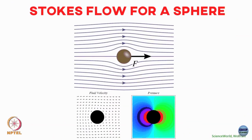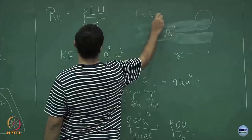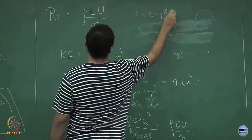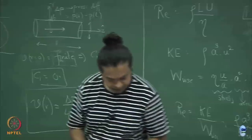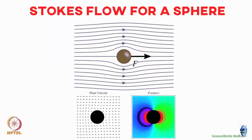The Stokes flow past a sphere — you can work out the solution of the Stokes equation past a sphere and show that the viscous drag is the famous formula 6πηrv. If you have not done it in a continuum mechanics course, the derivation of this 6πηr result can be uploaded.